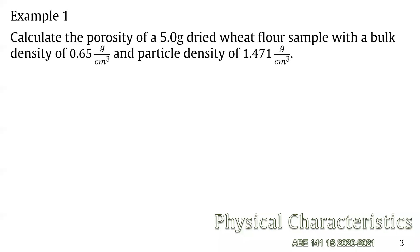Let's start with example number one. What is being asked is the porosity of a five gram dried wheat flour sample with a bulk density of 0.65 grams per cm³ and a particle density of 1.471 grams per cm³.